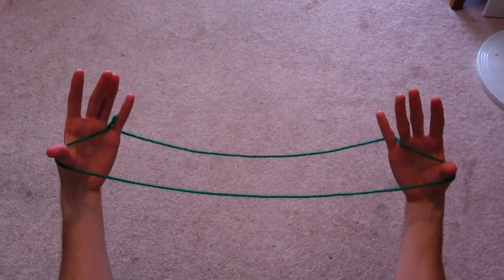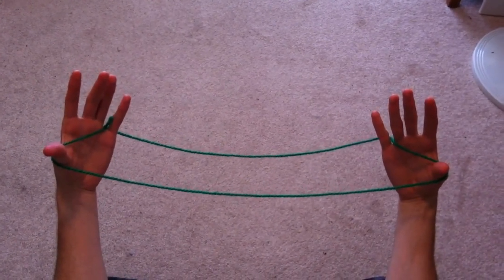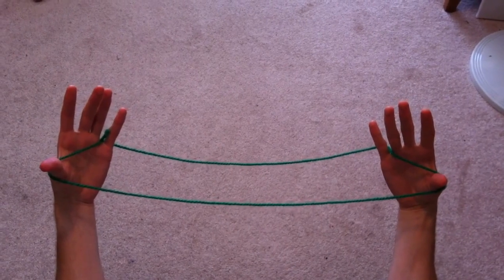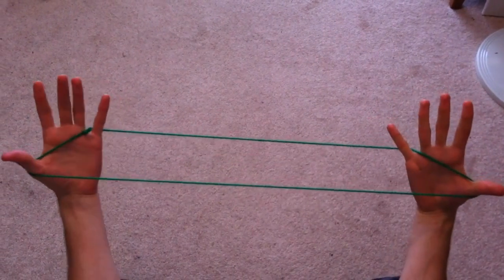This is Witch's Broom, also known as Fishing Spear and Tent. Start with your regular opening like this.